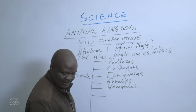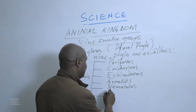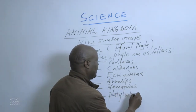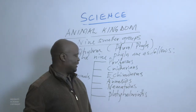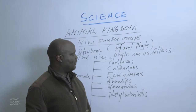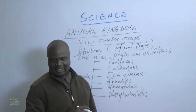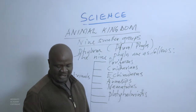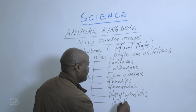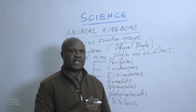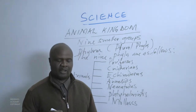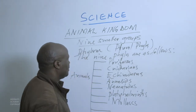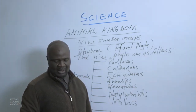The sixth phylum is called Platyhelminthes. We shall see the characteristics of Platyhelminthes — it is a phylum that contains flat animals. The seventh phylum is the Mollusks. We shall see the unique characteristics and behaviour of animals found in this group.